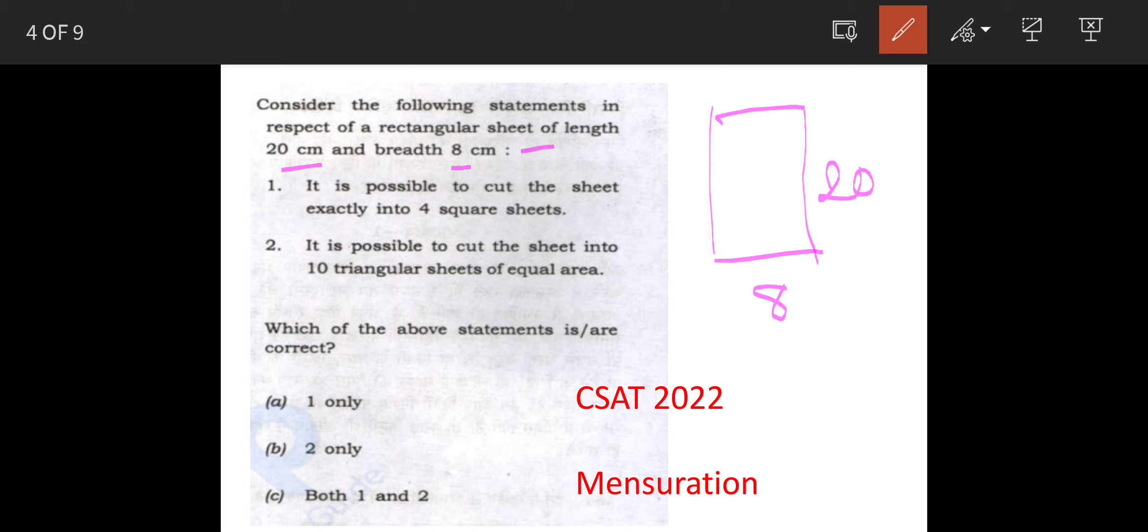So, the first statement is: is it possible to cut the sheet exactly into 4 square sheets? Now, what is square? Square means 4 equal sides at right angles. The second statement says: is it possible to cut the sheet into 10 triangular sheets of equal area. So, we will see the solution.